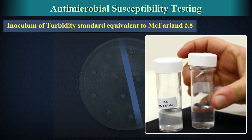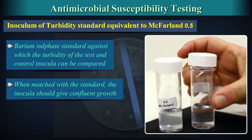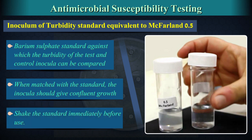An inoculum of turbidity standard equivalent to McFarland 0.5 should be used. McFarland is a barium sulphate standard against which the turbidity of the test and control inocula can be compared. When matched with the McFarland 0.5 standard, the inocula should give confluent growth. Always shake the standard immediately before use.